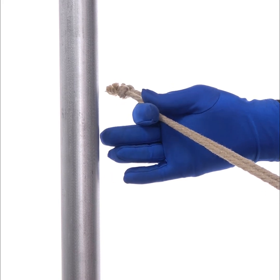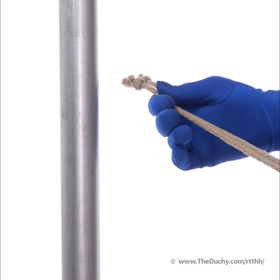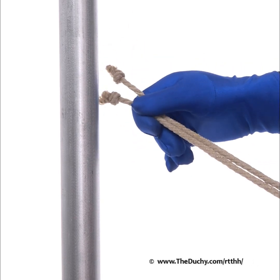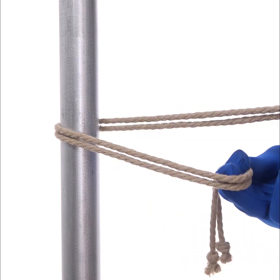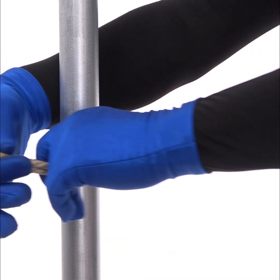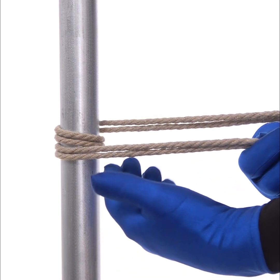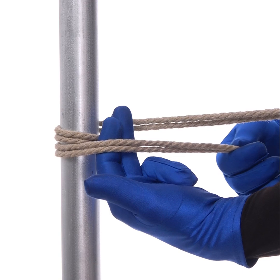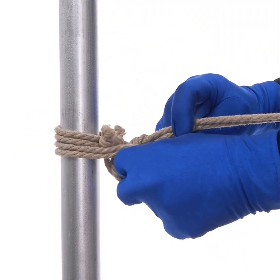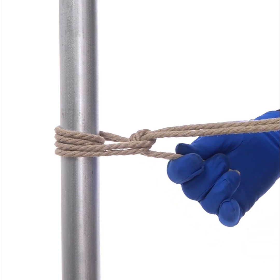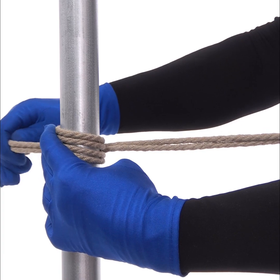The round turn two half hitches is just a regular two half hitch with an extra twist, like this. Take your ends, put them around your anchor point, like that. Before you tie it off with two half hitches, go around a second time, like this. That's the difference.